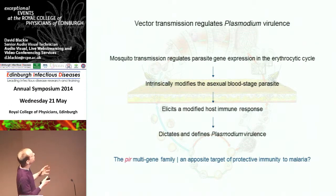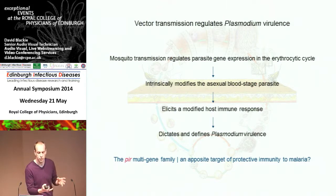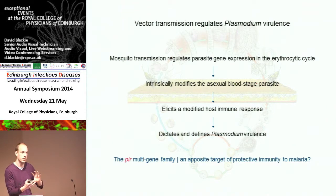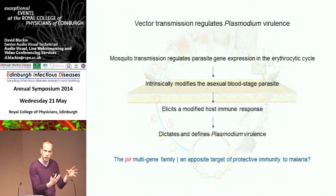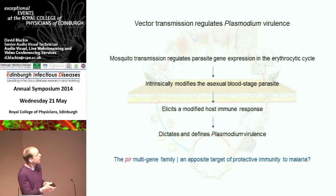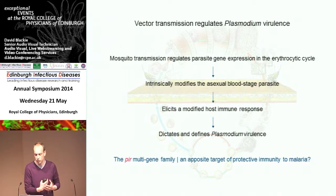To summarize: mosquito transmission regulates parasite gene expression in the erythrocytic cycle, which intrinsically modifies the blood-stage parasite so that it elicits a completely different immune response. That immune response then controls parasite growth and pathogenicity. We have shown that the pir multigene family is directly associated with parasite virulence and host immunity, and is therefore potentially a very good candidate for developing a malaria vaccine.